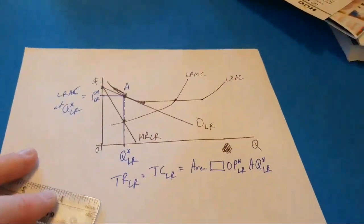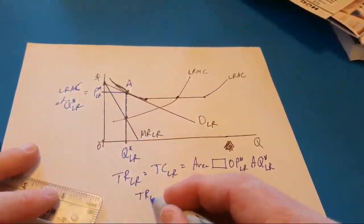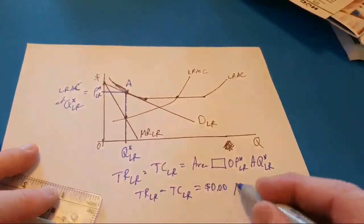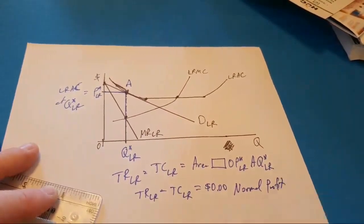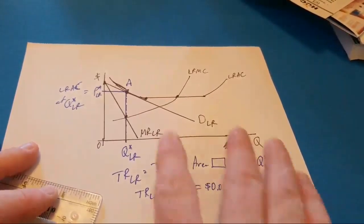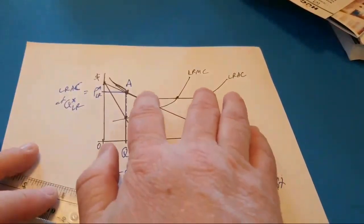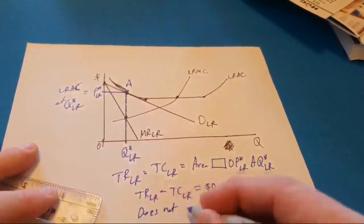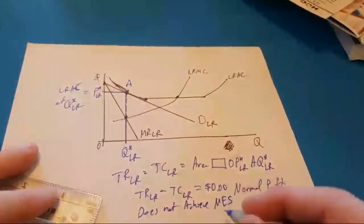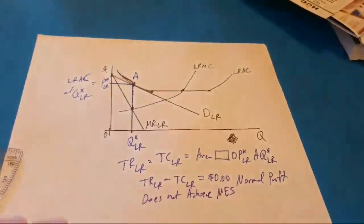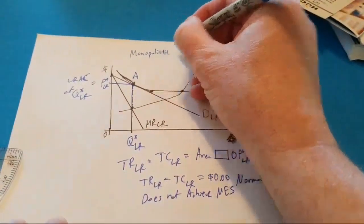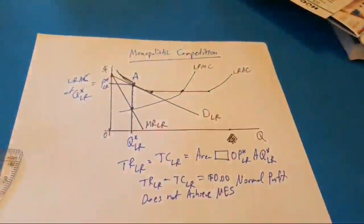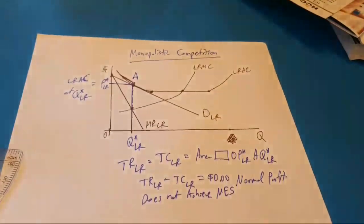Because total revenue equals total cost, TR minus TC in the long run equals zero dollars and zero cents — we call that a normal profit. Last question: does this firm achieve minimum efficient scale? Remember, minimum efficient scale happens at the start of the minimum range, and you'll notice long-run Q* is nowhere near that. So this firm does not achieve minimum efficient scale. Again, this is monopolistic competition, and this long-run graph only exists provided the firm produced in the short run. If it shuts down, there is no long-run graph because the firm is likely to exit the market.